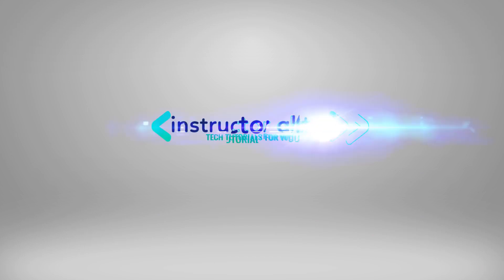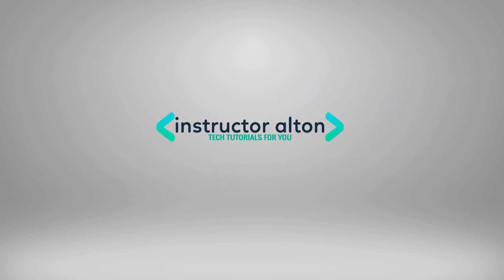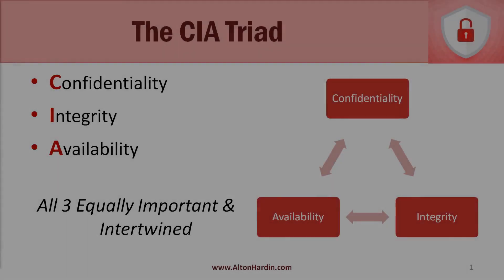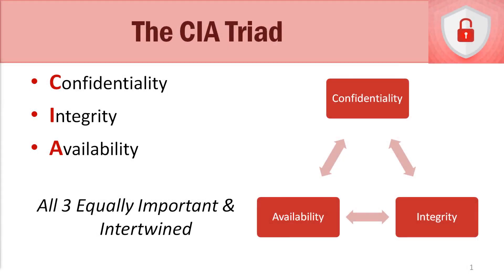In this video we're going to talk about the CIA triad. So what is the CIA triad? Well, the CIA triad stands for confidentiality, integrity, and availability. It doesn't stand for the Central Intelligence Agency — it's not related to the US federal government, spies, or anything like that. When we talk about information security and cybersecurity, it deals with these three core principles.